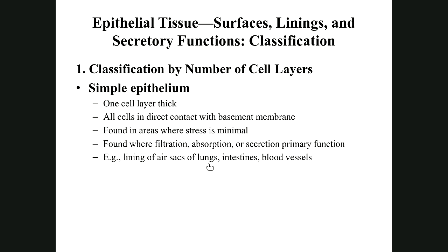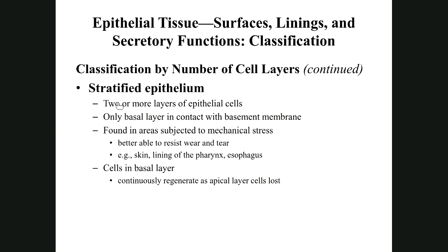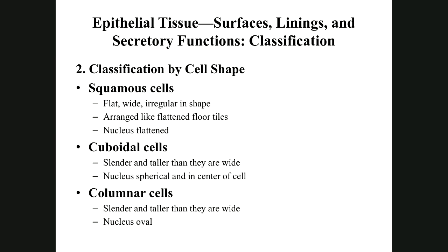Stratified epithelium has two or more layers. It's found in areas with more mechanical stress, rubbing, and physical wear and tear — it's more protective. For shape, there are three main types: squamous cells are flat and thin; cuboidal cells are about as tall as they are wide; and columnar cells are taller than they are wide.